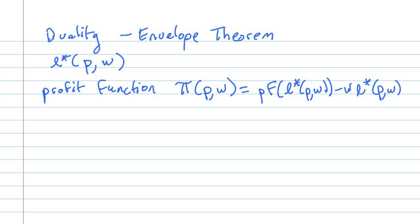And here is the critical result. When you try to compute partial pi partial P, it turns out even though this looks like L star is involved with all of this, the only thing that gets left over is F of L star of PW. That is the derivative of the profit function with respect to the product price is the output that's optimal at that product price.